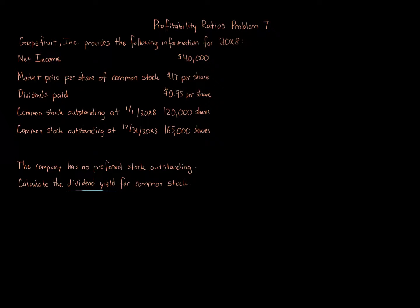We're focusing on dividend yield, which measures the rate of return to common stockholders from cash dividends. It's of special interest to investors whose objective is to earn revenue from dividends. For example, telecommunications is a great industry if you're looking for dividend return, whereas the tech industry — like development of computers and technology — tends to retain earnings for growth. So you're banking more on stock growth, not dividends paid. Telecommunications typically pays a good percentage of dividends each year as long as the company is doing well.